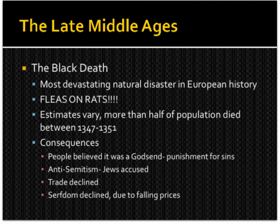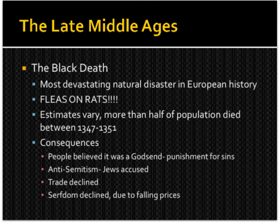The Black Death arrived in the late Middle Ages — it's the most devastating natural disaster in European history. Estimates vary, but somewhere between half to two-thirds of the population of Europe died between 1347 and 1351. Consequences of the Black Death included: people believed it was God punishing them for their sins; some blamed the Jews, leading to anti-Semitic accusations that Jews had poisoned the wells. Trade declined because so many people died and there weren't enough workers to produce goods. Serfdom also declined due to falling prices.